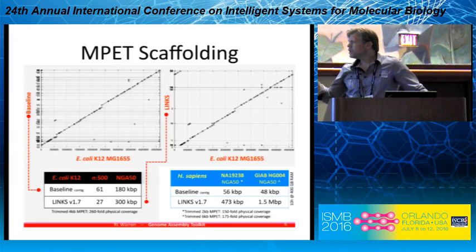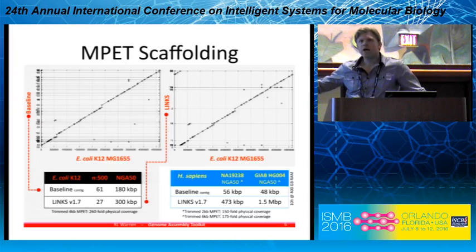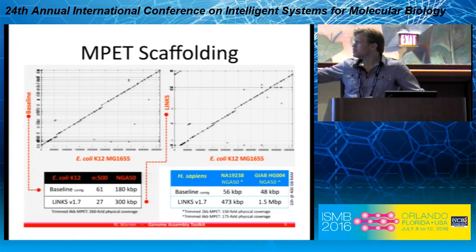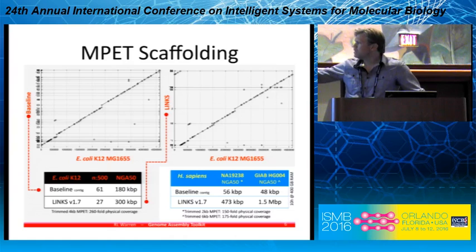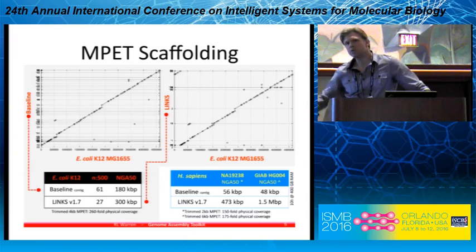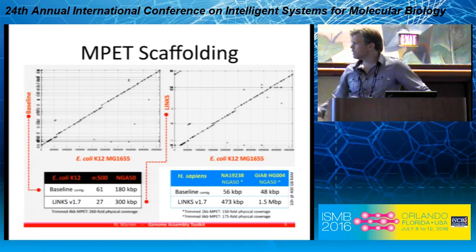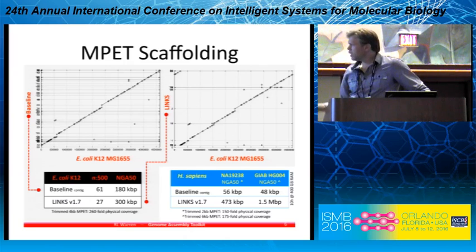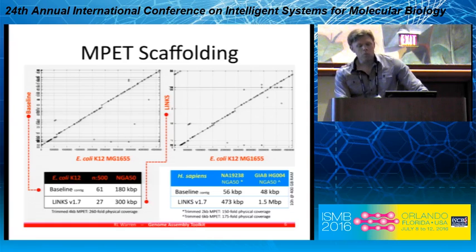For human, the results are even more noticeable. The MPET library we had was quite comprehensive, about 150X coverage and 175X coverage. These are public data sets. The NA19238 individual gave us an NGA50 of 473X — an order of magnitude more contiguous — the resulting assembly with that version of Lynx. And the Genome in a Bottle HG004 individual gave us an even more contiguous assembly after MPET scaffolding.